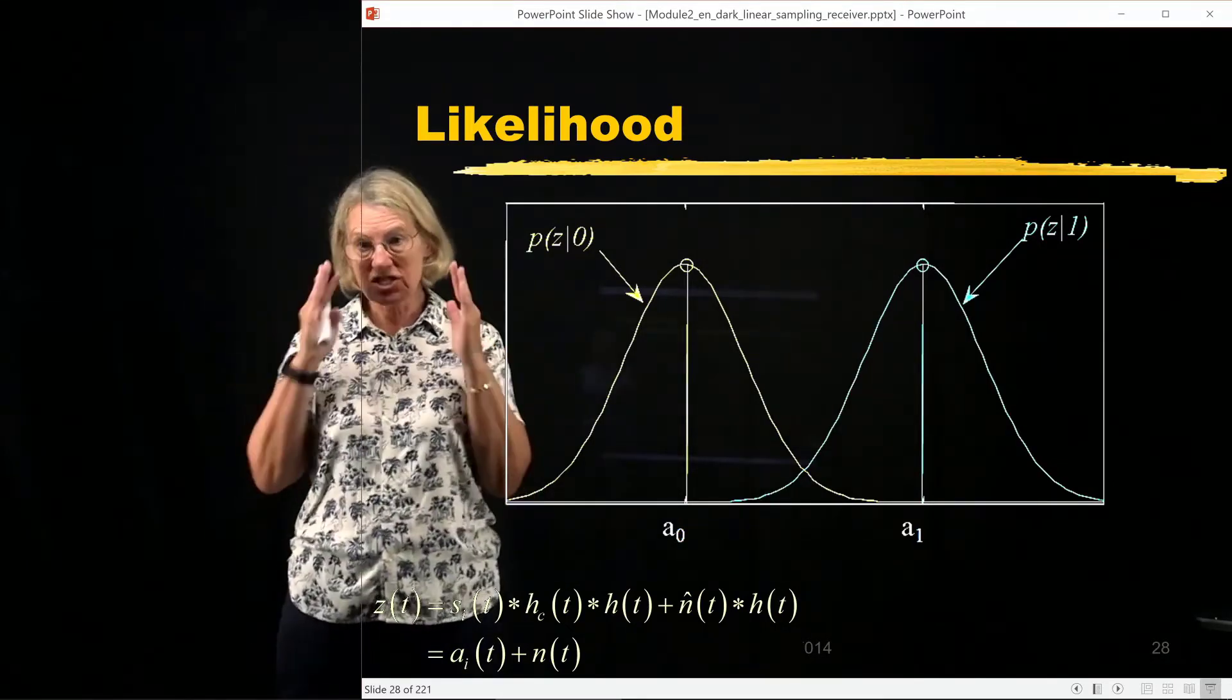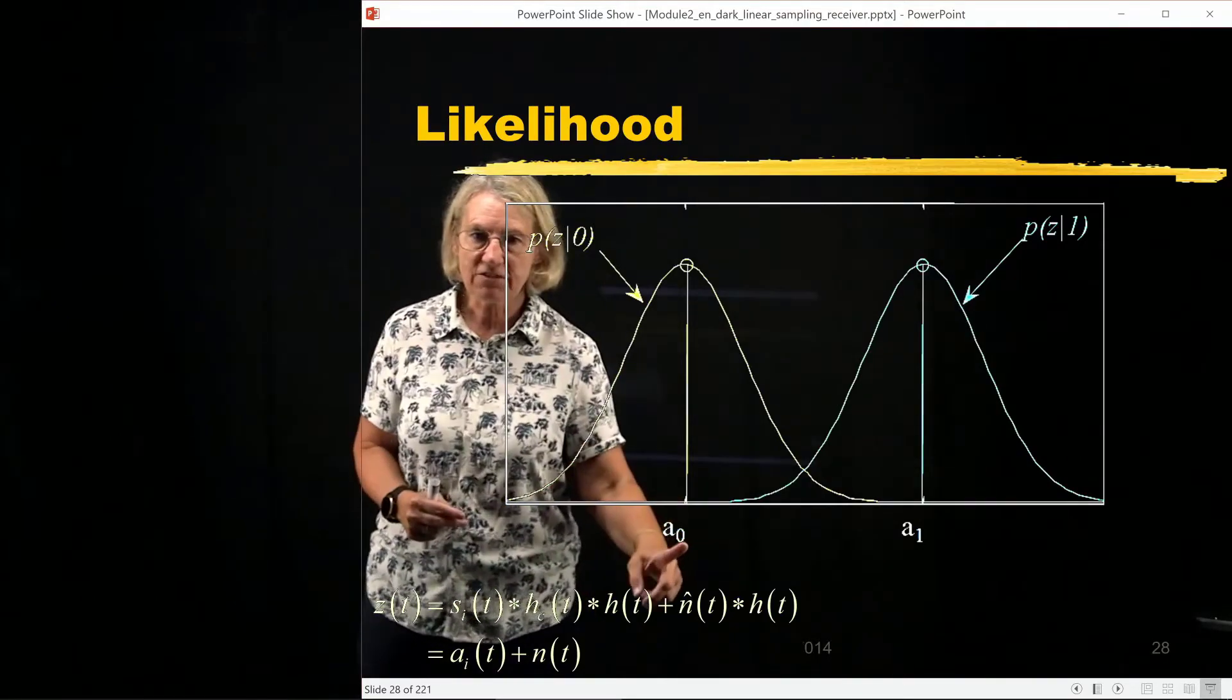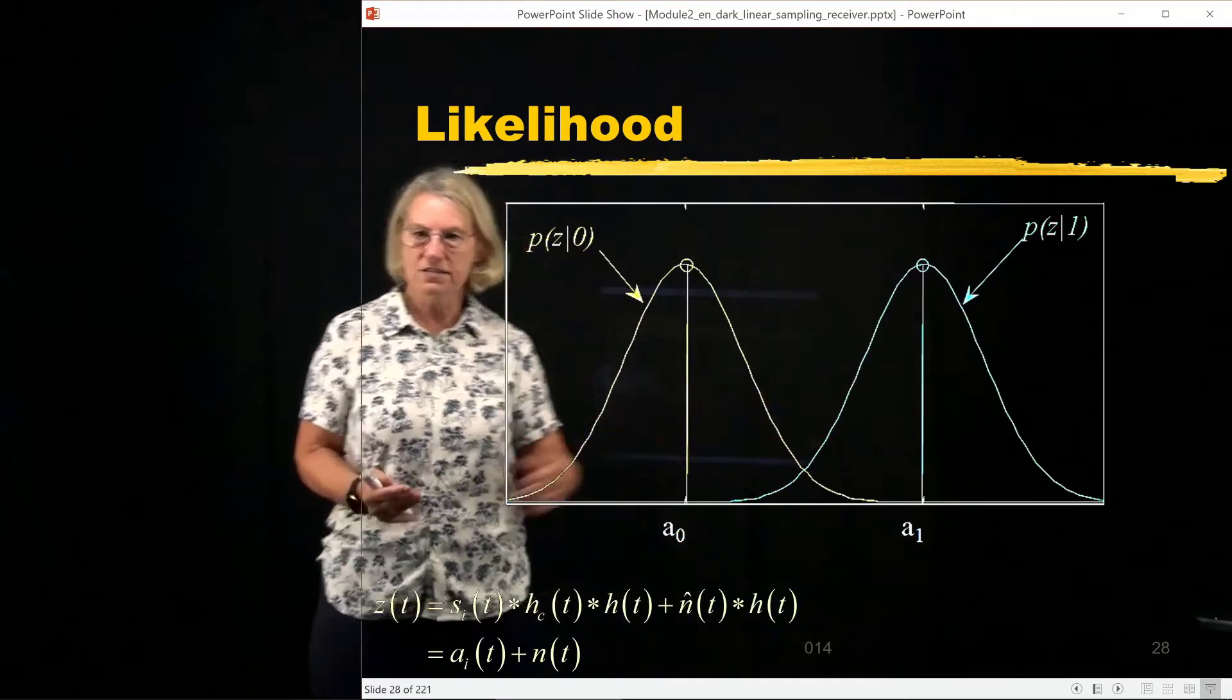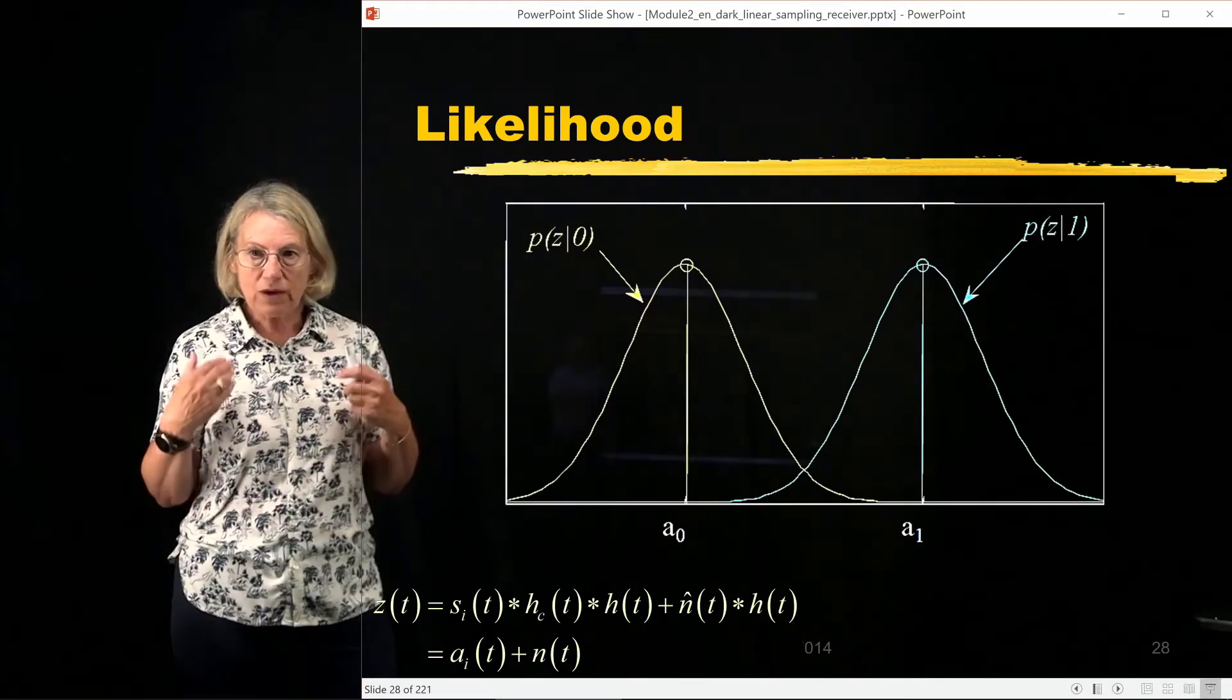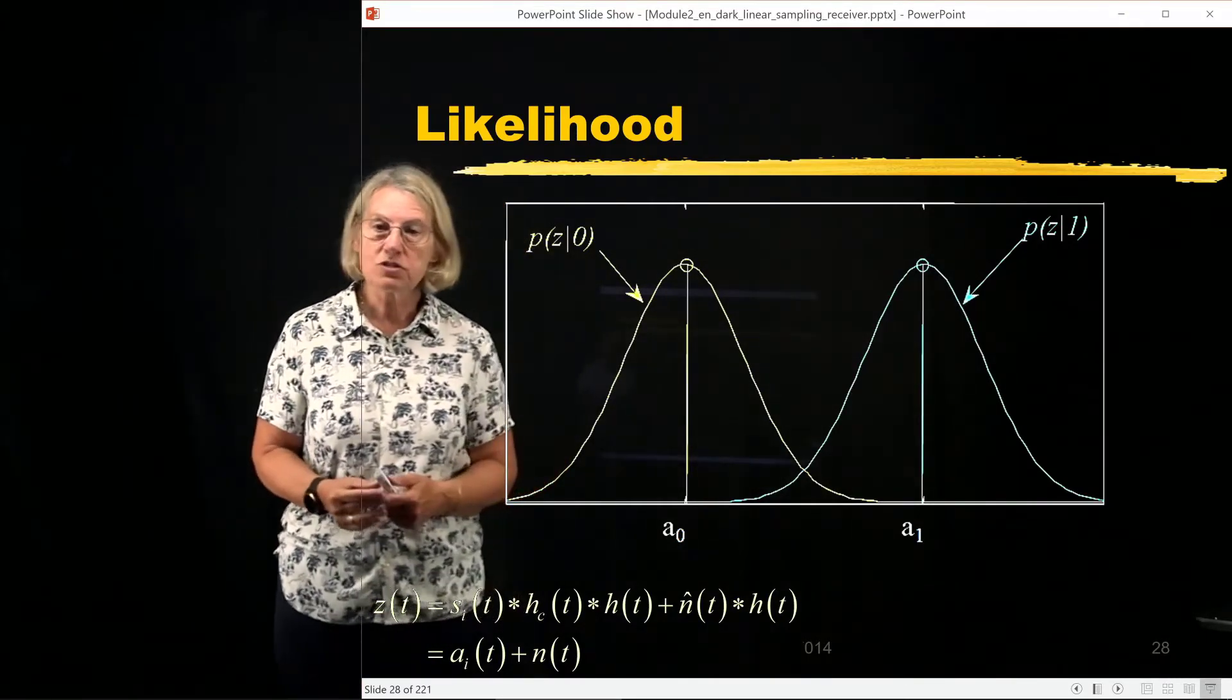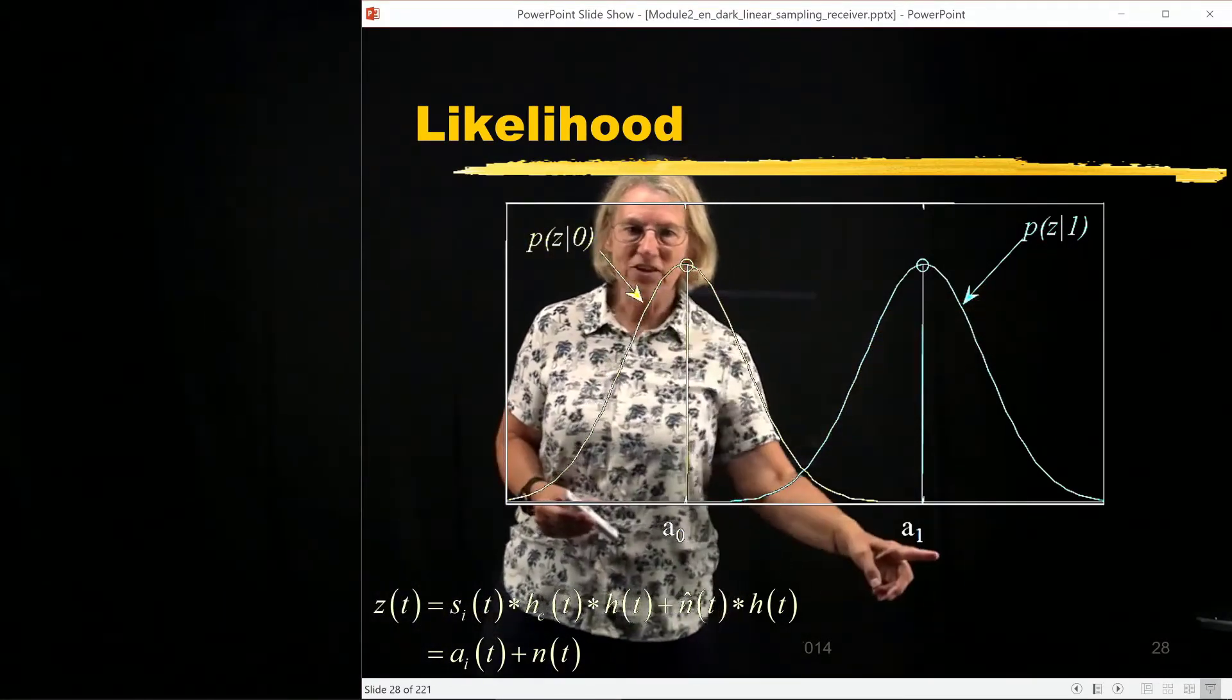But they have different means. They have the same shape, they're just as fat one as the other because they have the same variance. But the means are different. And again we're assuming a₁ is greater than a₀. So here is the graph of these two density functions.